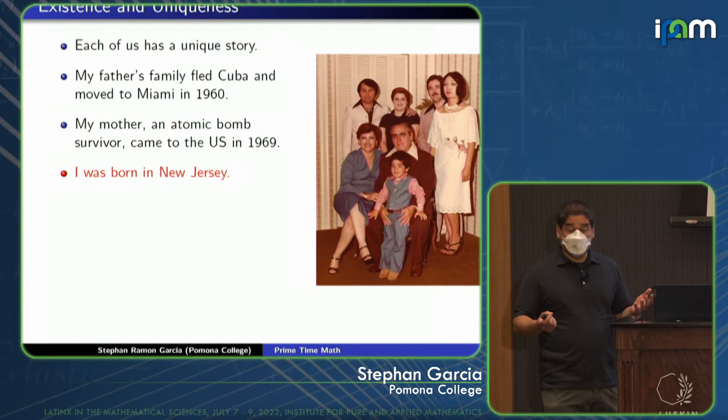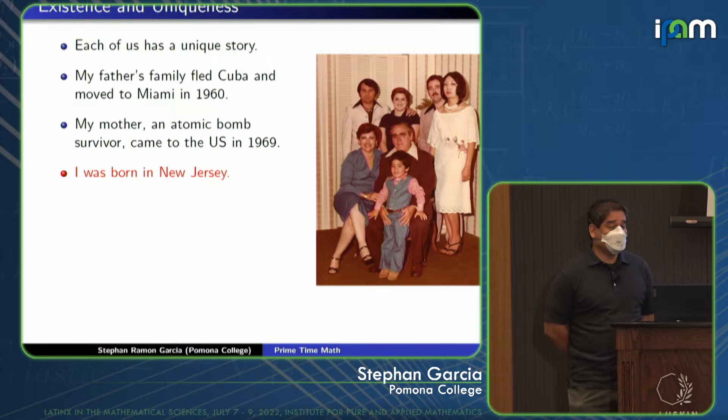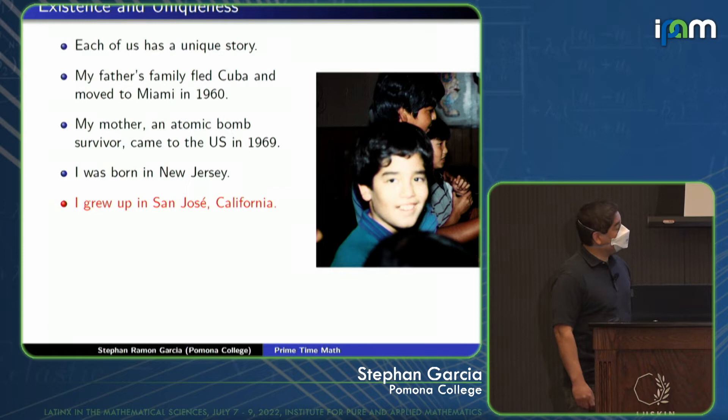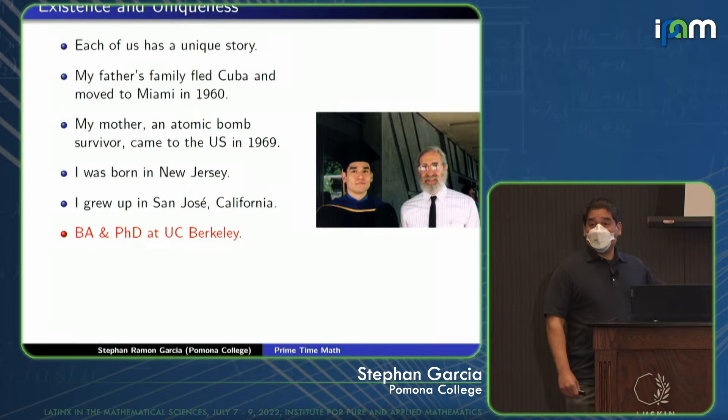That's where I was born, and you can see me there rocking the 1970s styles. This picture is from Miami in the 1970s. I hate to date myself. I grew up in San Jose, California, and this is like a scene from Stranger Things. It's literally me in the 1980s in an arcade playing video games with my friends. I got my B.A. and Ph.D. in mathematics at UC Berkeley. This is me graduating with my Ph.D. That's my advisor, Donald Saracen.